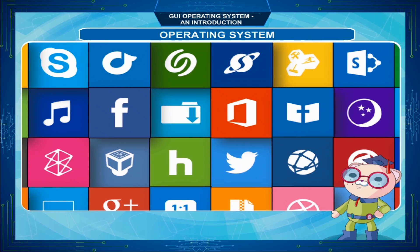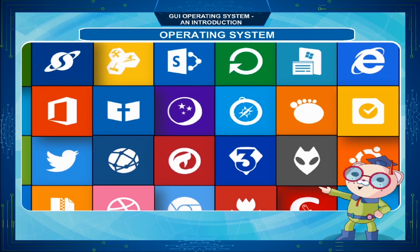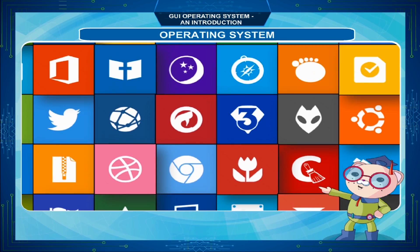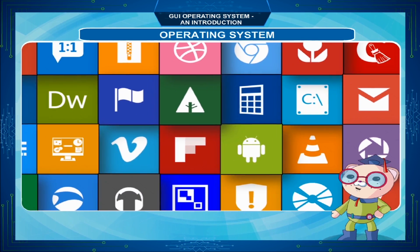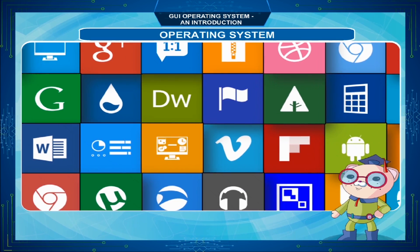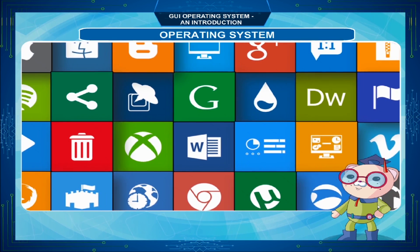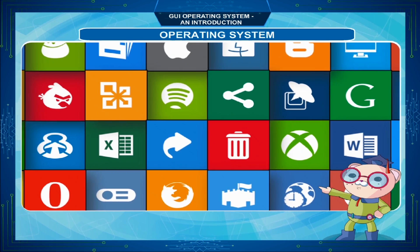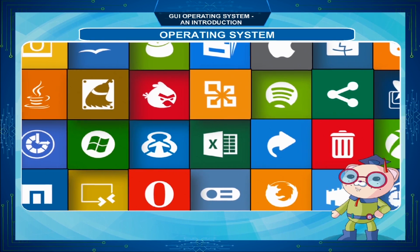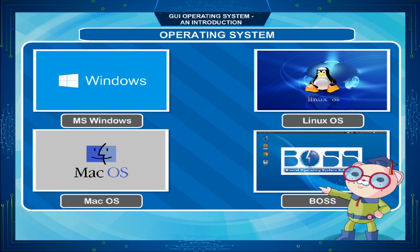The Graphical User Interface or GUI Operating System has a visual environment using windows, buttons and icons. From the beginning till now, there have been many operating systems in use, but the most popularly used and common operating systems are MS-DOS,